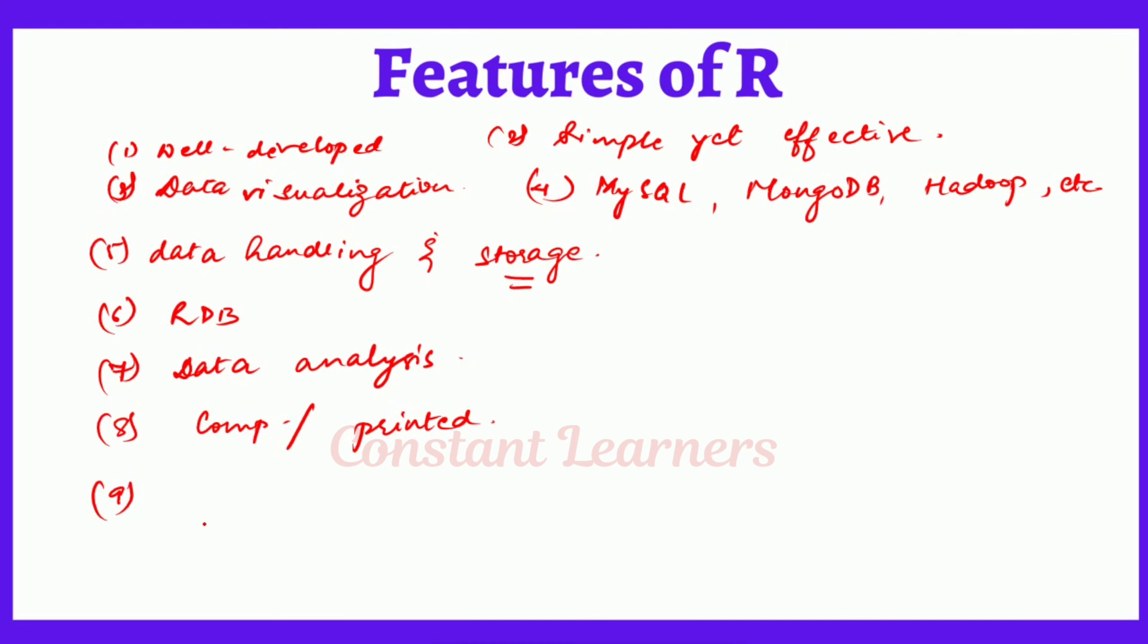Then we also saw one point that it helps in machine learning, right? So for statistical and machine learning operations, it allows regression, classification, clustering, recommendation, and text mining. All of these are features of R language. So just remember a few points and from those points, try to build your answer and that will be very easy. You don't need to memorize a lot of it. I hope that whatever I have explained was clear.